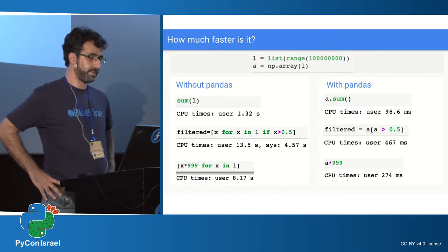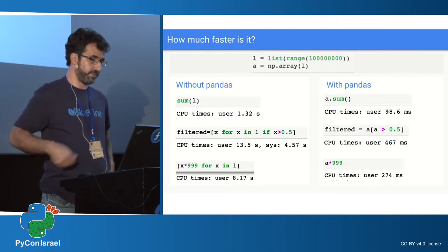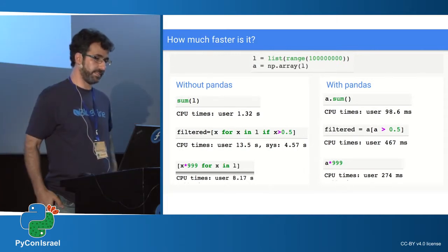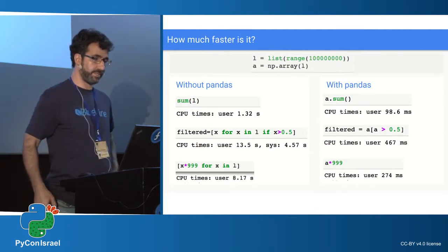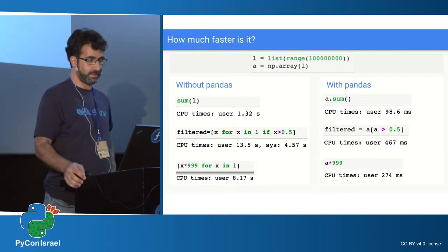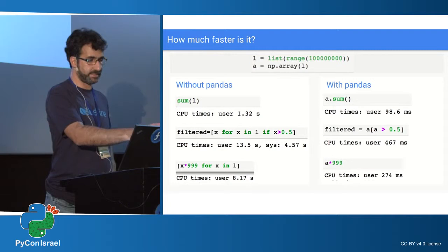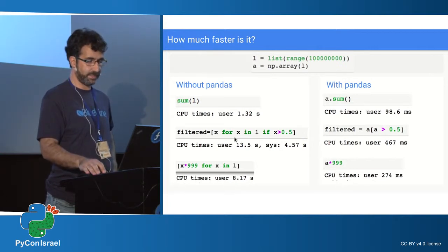Here I ran a very simple test: I took 100 million numbers and ran simple functions like sum, filter, and multiplying by scalar. On the left side without Pandas, and on the right side with Pandas. Not only are the results much faster — around 30 times faster — but I think the code with Pandas is a bit clearer. Maybe you have to get used to it, but eventually I believe it becomes much clearer.